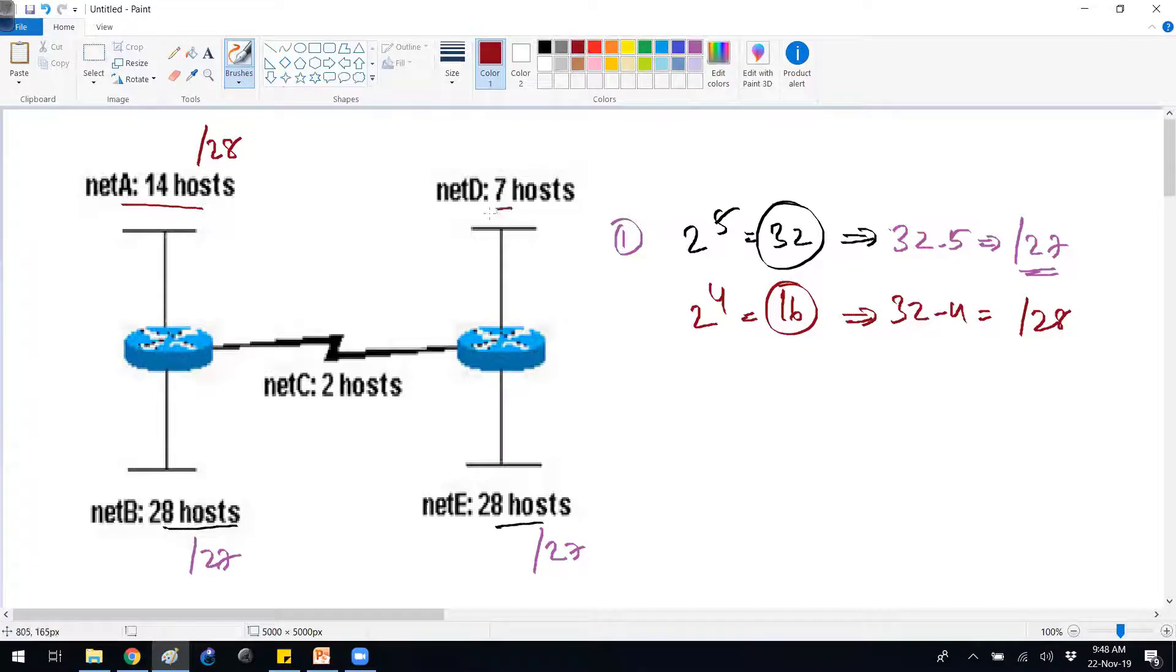Likewise, 7 is my requirement. 7 means you cannot go with 2 to the power of 3. 2 to the power of 3 is 8, 8 minus 2 is 6 again. So we'll be going with the same /28 here because we'll be going with size 16 here also.